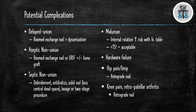A solid nail is more appropriate in the infection setting as it has less central dead space. Malunions can occur — internal rotation is more common with the use of a fracture table, and less than 15 degrees of rotation from the contralateral leg is acceptable. Hardware failure can occur, and as previously discussed, hip pain or a limp can develop secondary to an antegrade nail, while knee pain or retropatellar arthritis can develop secondary to a retrograde nail. There are many complications with these injuries, so it is important to educate and inform the patient prior to surgical intervention.